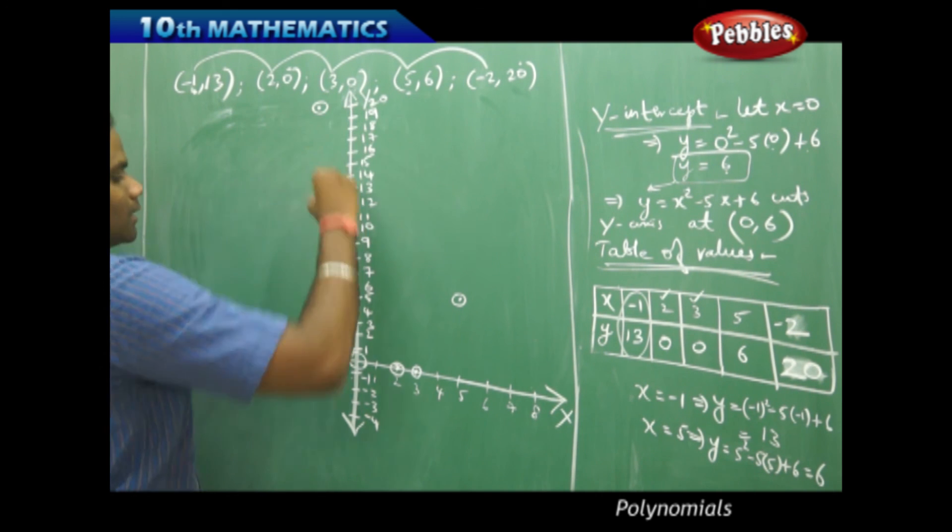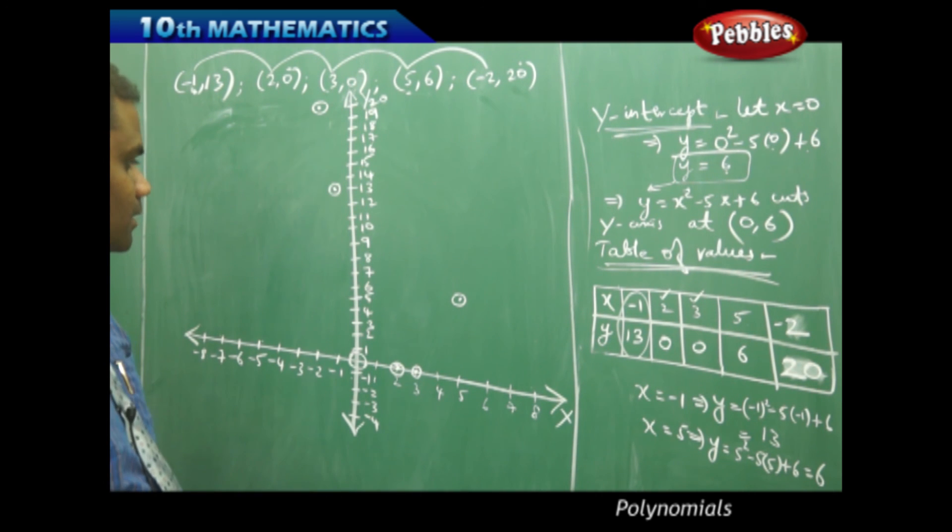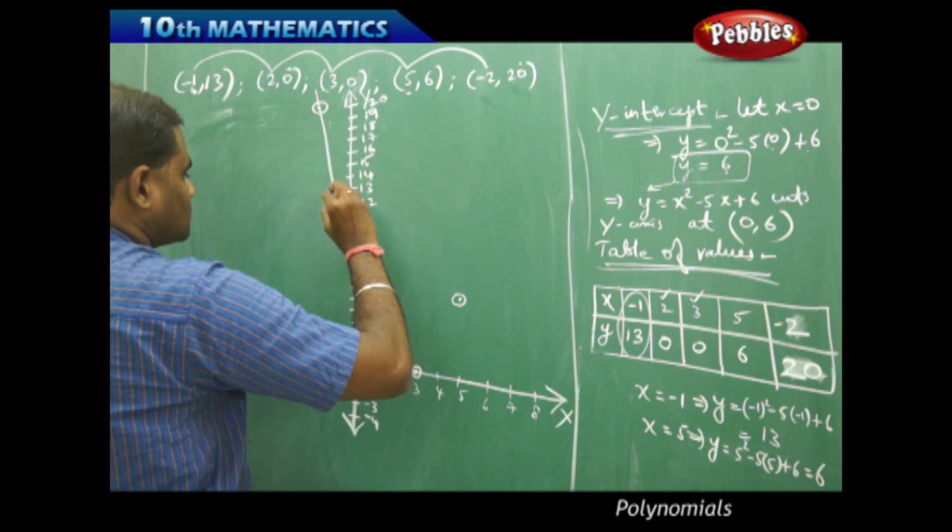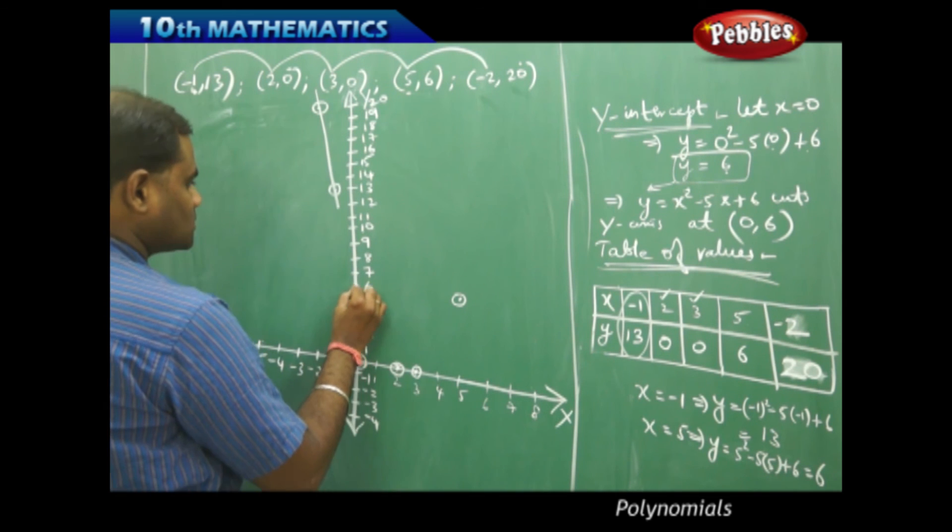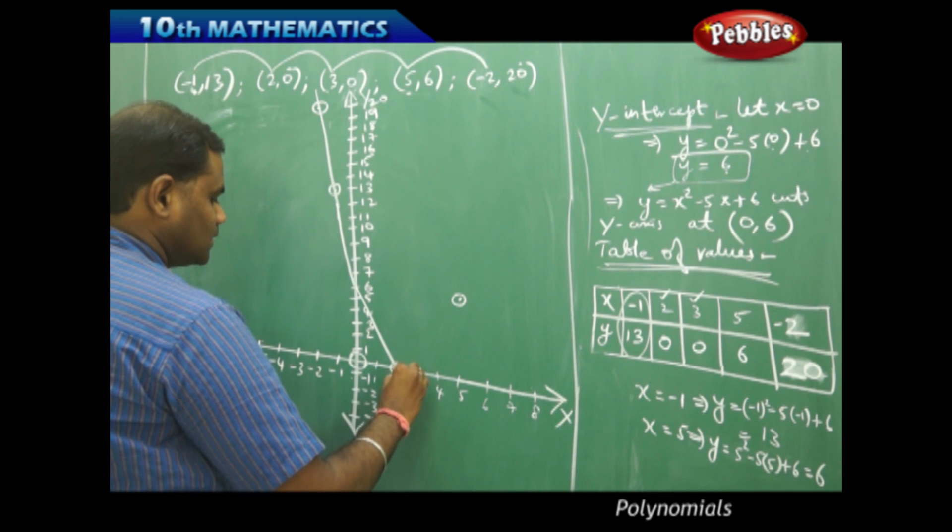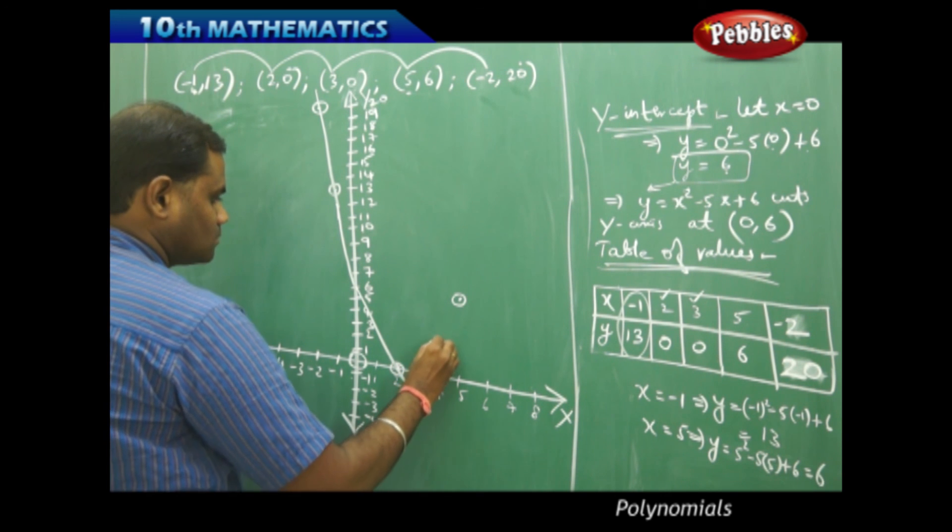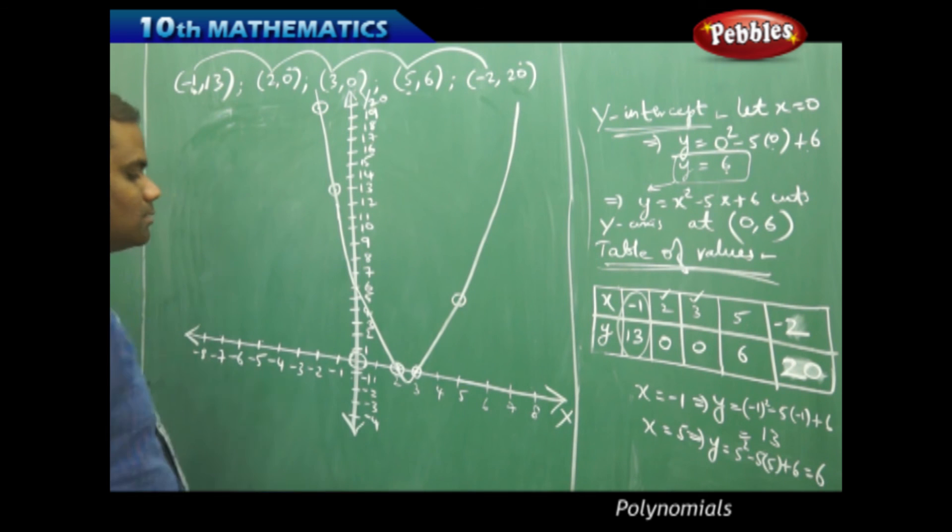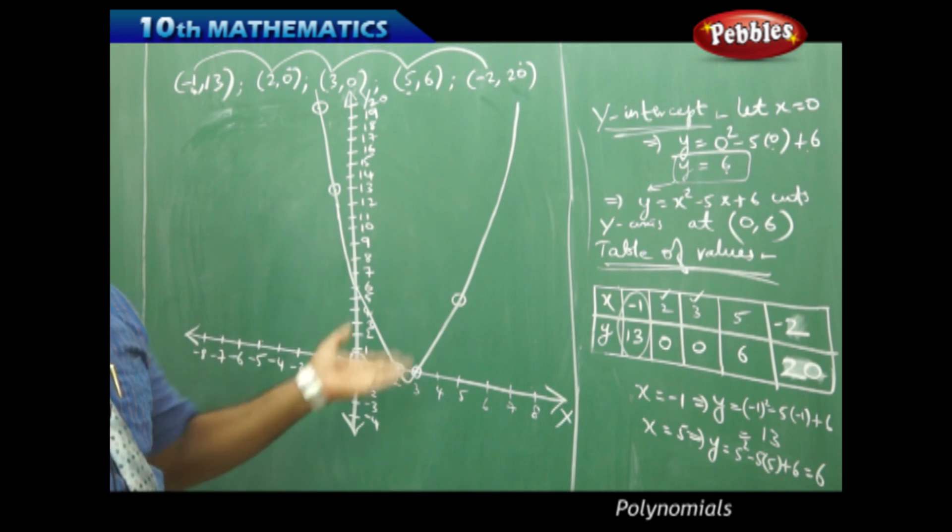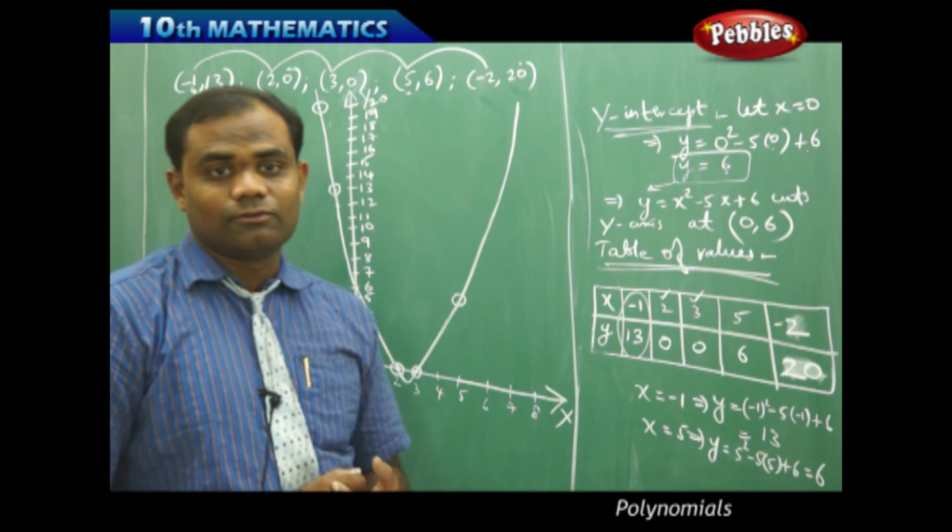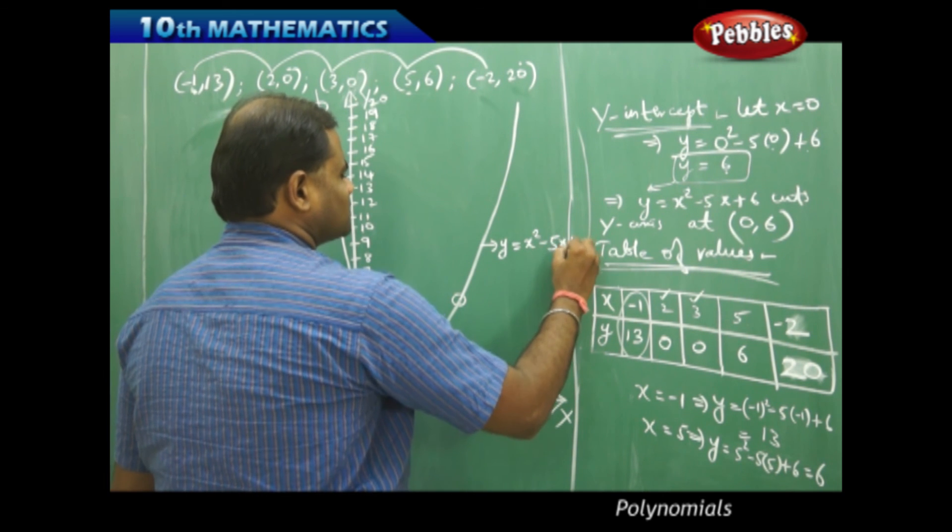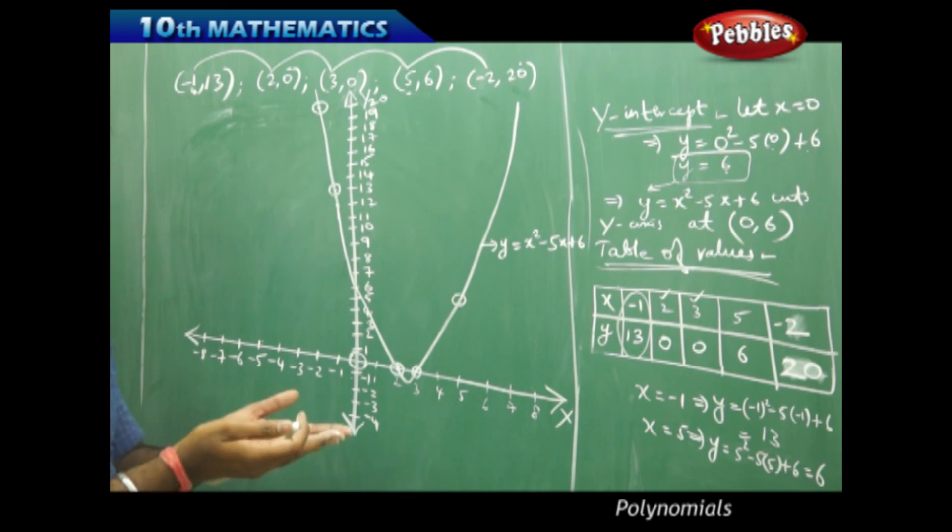So, the values which I have taken has given me different points where, interestingly, it gives me the conclusion that when I just join the points and also I have the y intercept of 6, so this graph must pass through 6 and then like this. This is, similarly, somewhat the shape of a u-shaped graph is what I obtain for a quadratic polynomial. y equals x square minus 5x plus 6 would be somewhat in the shape like this.